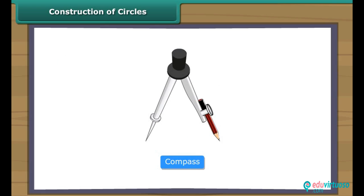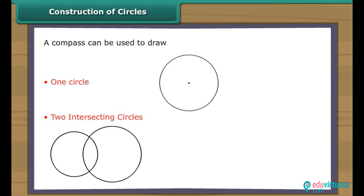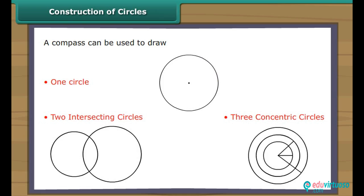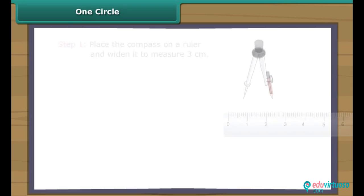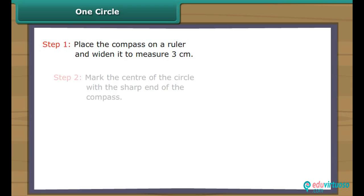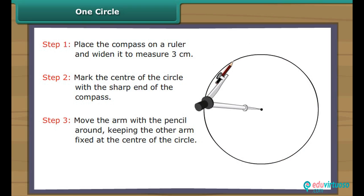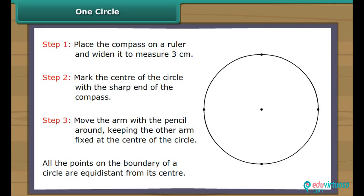We draw circles with the help of a compass. A compass is an instrument with two arms. While one arm remains fixed, the other arm with the pencil moves freely. Let us draw a circle with three centimetres radius. Place the compass on a ruler and widen it to measure three centimetres. Mark the centre with the sharp end of the compass. Move the arm with the pencil around, keeping the other arm fixed at the centre. The circle is formed. All the points on the boundary of a circle are equidistant from its centre.